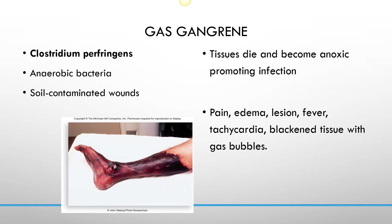Gas gangrene. There are three major types of gas gangrene — one caused by Clostridium perfringens, another caused by strep, and another that's a mixed infection — but we'll focus on the one caused by Clostridium perfringens. Clostridium perfringens is a strict anaerobic microorganism. It thrives in anaerobic environments and can die in the presence of oxygen, so it prefers to create an anoxic environment around it.